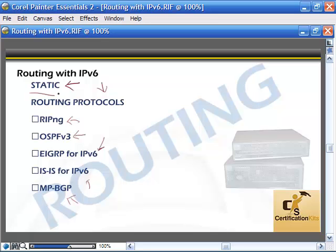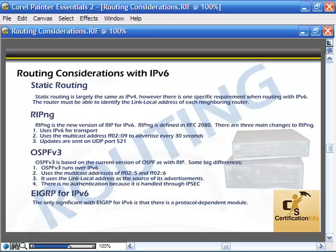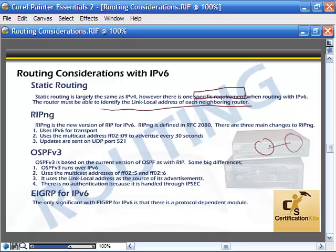Let's look at some considerations when routing with IPv6. Static routing is very similar to IPv4, except there's one specific requirement: when routing with IPv6, the router must be able to identify the link local addresses of each neighboring router. If we have a couple of routers, they will have addresses that are local to that particular link so they can talk directly with each other — non-routable addresses.